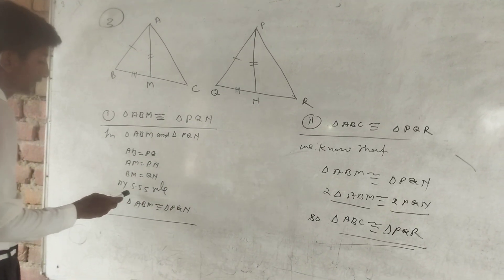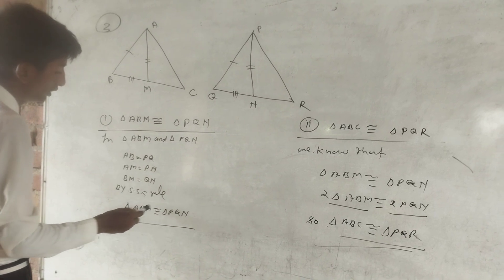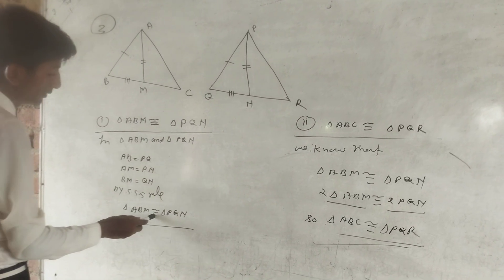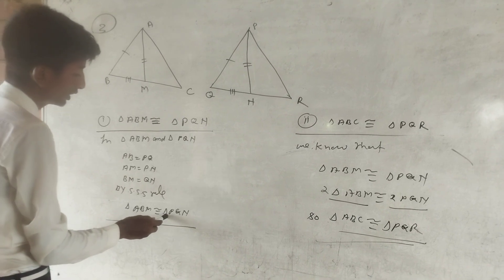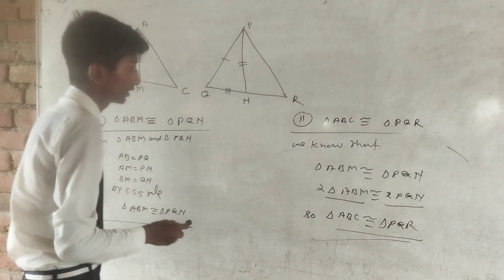We have given that by side-side-side rule, triangle ABM congruent to triangle PQM. This is the proof.